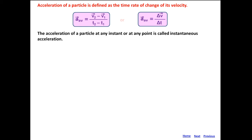The instantaneous acceleration is the acceleration of a particle at any instant. If a particle is moving and we want its acceleration at any instant — say from a velocity-time graph at a particular point — that acceleration at that point is called the instantaneous acceleration. It is defined as: A vector equals the limit as ΔT tends to 0 of ΔV by ΔT, which is dV by dT.